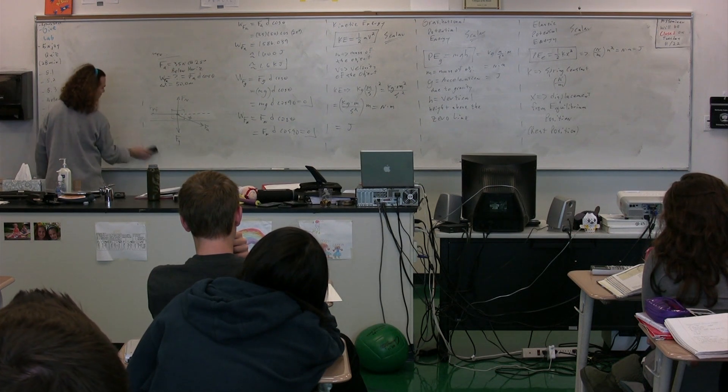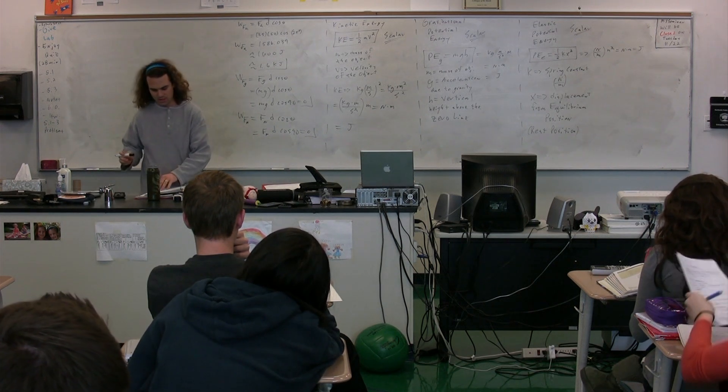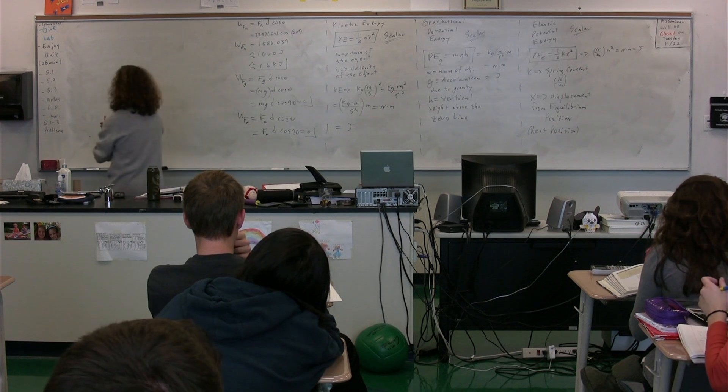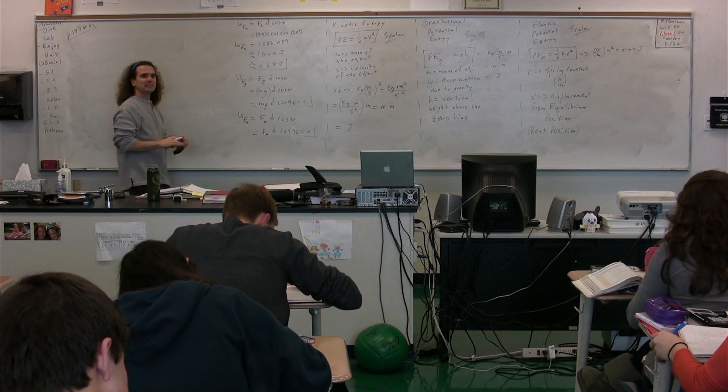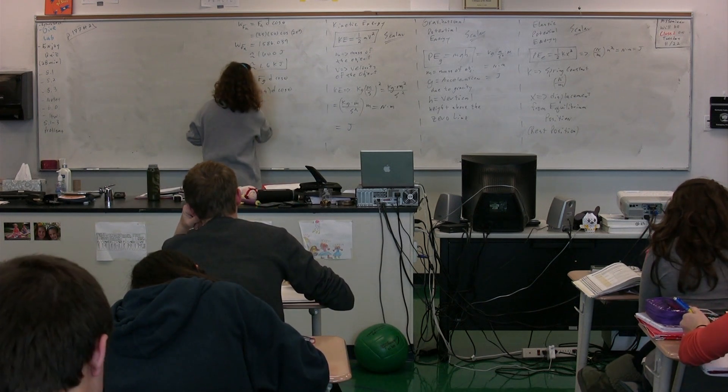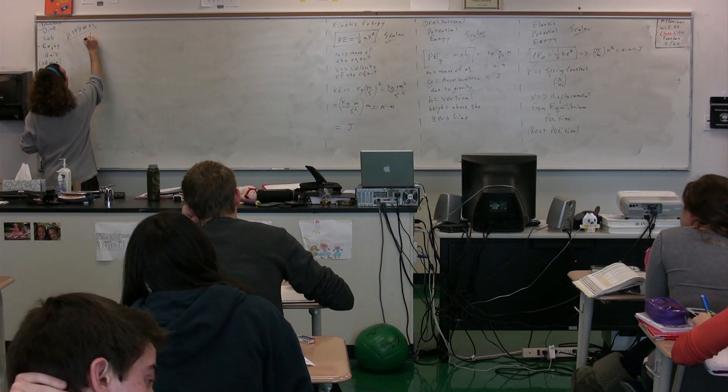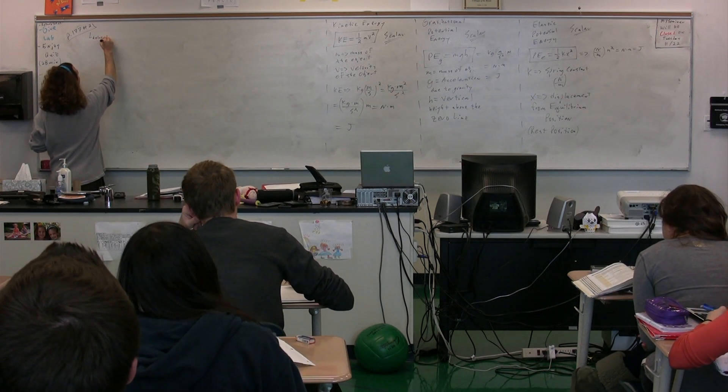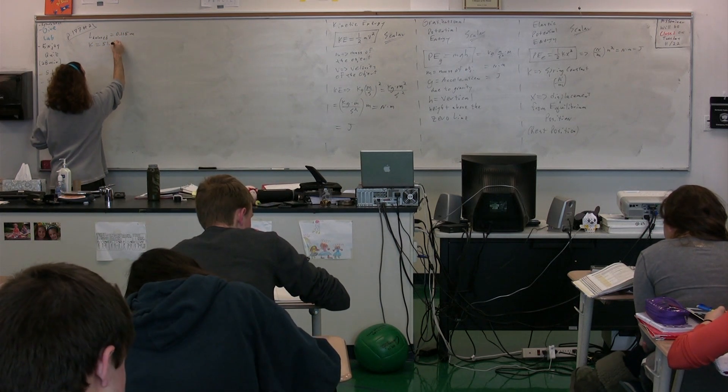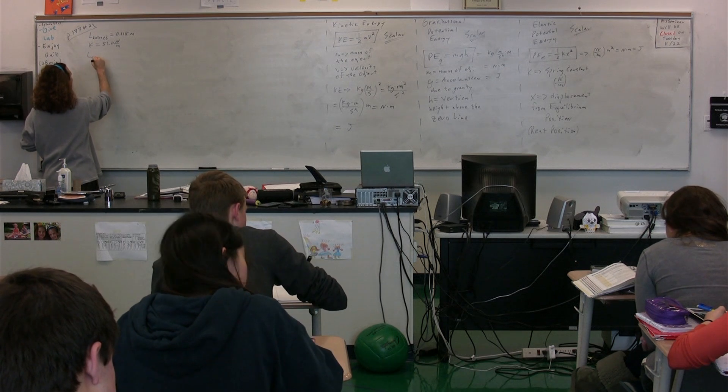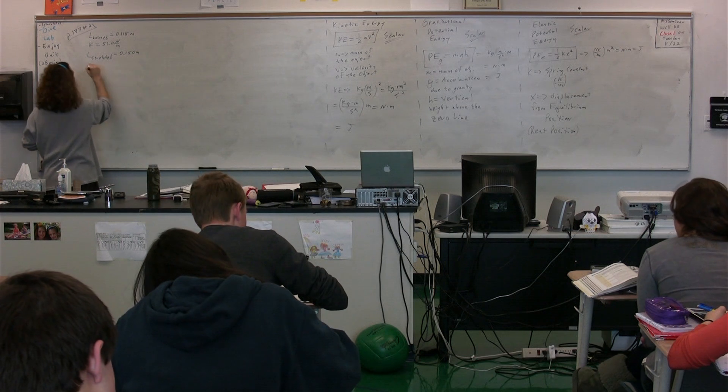So let's do an example involving a spring so we can work with that equation and understand a little bit more about it. Let's go to page 177, practice problem number two. Chad, if you could please read it when you get it there. The staples inside a stapler are kept in place by a spring with a relaxed length of 0.115 meters. If the spring constant is 51.0 newtons per meter, how much elastic potential energy is stored in the spring when its length is 0.150 meters?